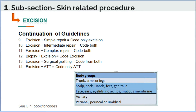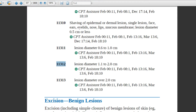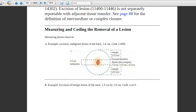In excision, we have a body group similar to shaving, with the addition of axillary — which is related to the armpit — and another group: perianal, perineal, or umbilical. So we have five groups total in excision.